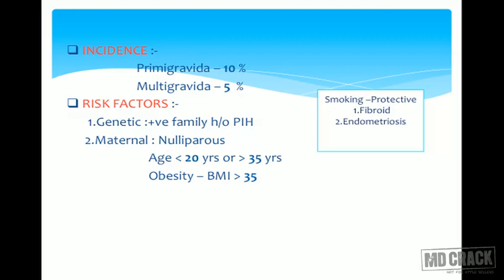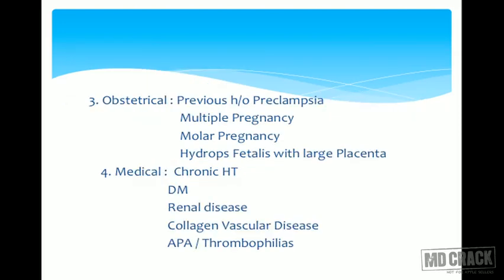Smoking is also a protective factor for fibroids and endometriosis — it decreases estrogenic levels, which likely provides protection. Nulliparous patients under 20 years or over 35 years are more prone to PIH. Obesity with BMI more than 35 also increases the risk of PIH.